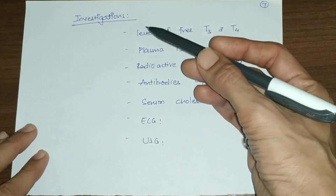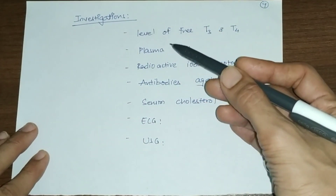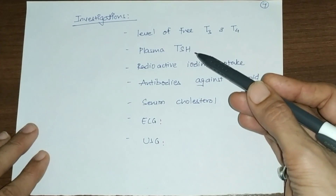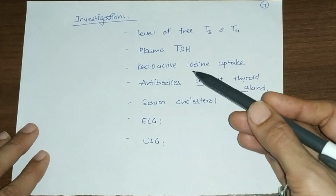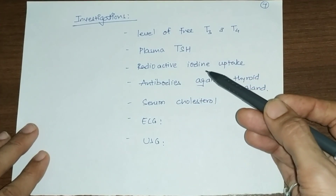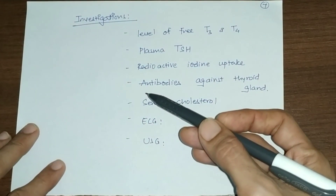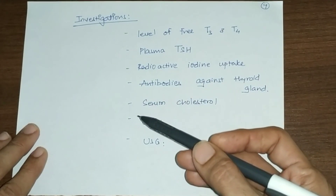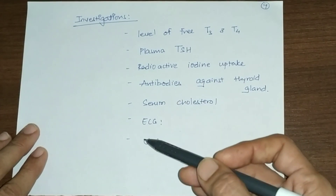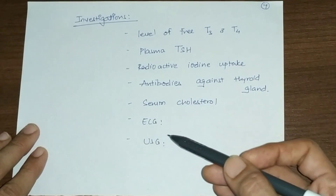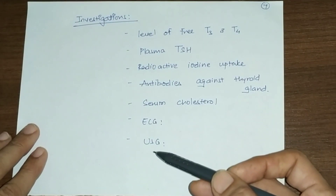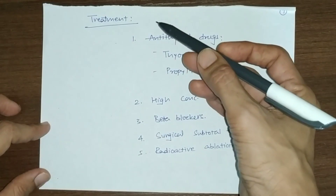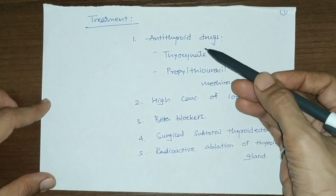Investigations in hyperthyroidism: free T3 and T4 levels are increased; plasma TSH is reduced; radioactive iodine uptake is increased. In Graves disease, antibodies against the thyroid gland are detected. Serum cholesterol level decreases. ECG shows tachycardia and arrhythmia, and ultrasonography of the thyroid gland shows diffuse goiter.